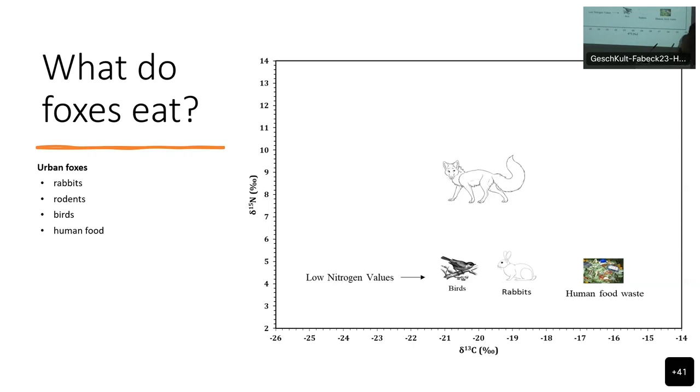Human food consists of food items of low trophic level. So, we usually expect the urban foxes to be down there. Because we know that anthropogenic food has lower nitrogen values than the natural prey that we find.